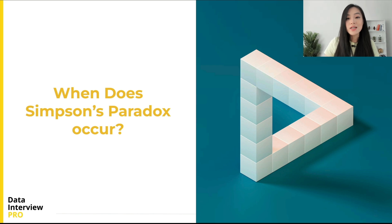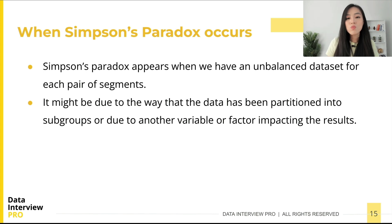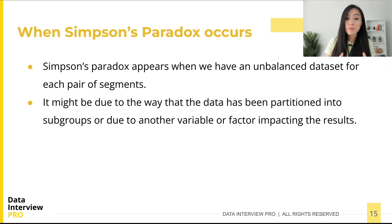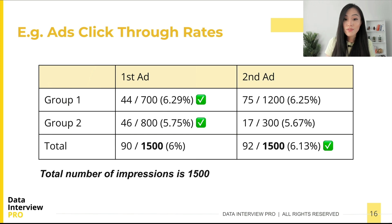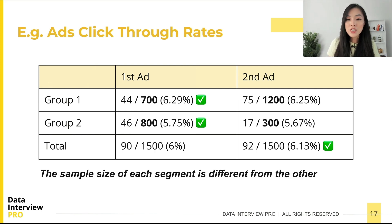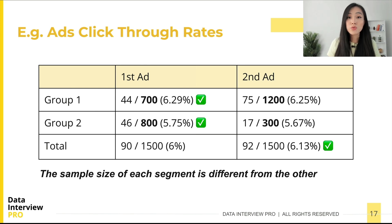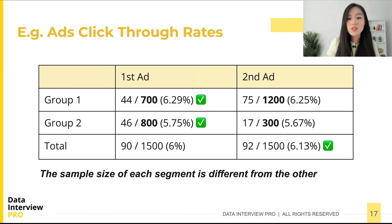Now let's talk about when Simpson's Paradox occurs and whether there's any way to get a heads-up that it might occur. Simpson's Paradox appears when we have an unbalanced dataset for each pair of segments — the sampling is not uniform and the sample size of each segment differs. In our example, we have the same total impressions for ad one and ad two, but there is a major disparity in the number of impressions between group one and group two. For ad one impressions were similar across groups, so we'd expect its overall click-through rate to be halfway between the two groups, but for ad two group one was much larger and had a significantly higher click-through rate.